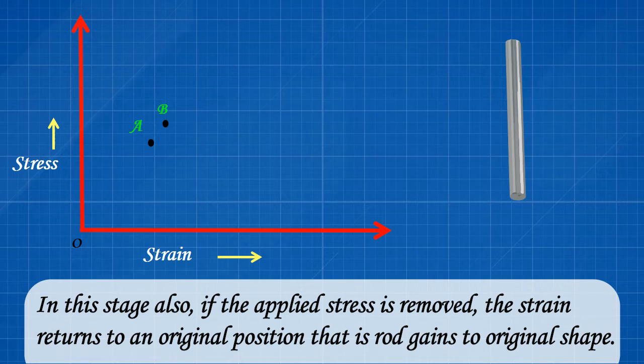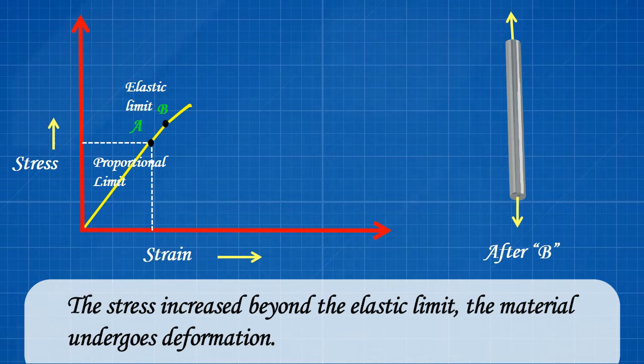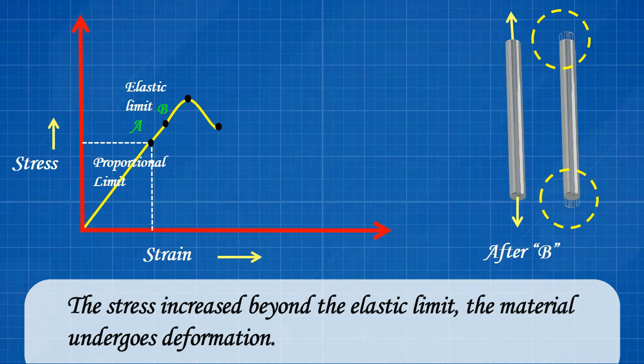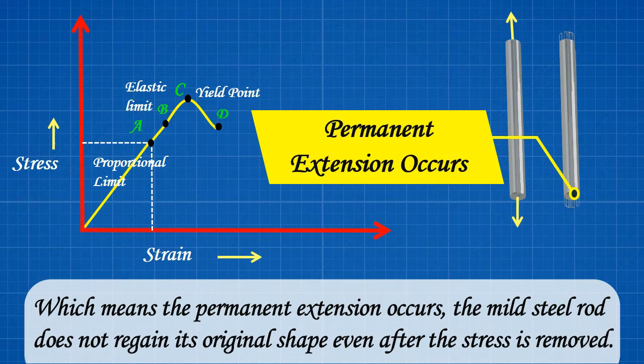The stress increased beyond the elastic limit, the material undergoes deformation, which means the permanent extension occurs. The mild steel rod does not regain its original shape even after the stress is removed.